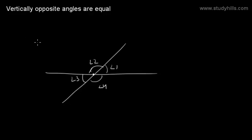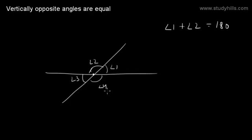We know that the sum of Angle 1 and Angle 2 is 180 degrees because they are on a straight line. So we can say Angle 1 plus Angle 2 is equal to 180. Similarly, Angle 2 and Angle 3 are on the same line, so the sum of Angle 2 and Angle 3 is also 180. Therefore, Angle 2 plus Angle 3 equals 180.